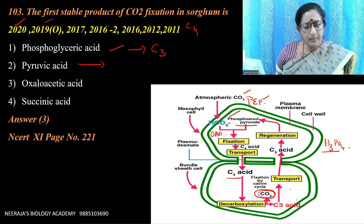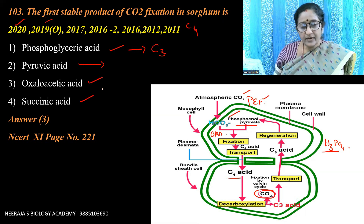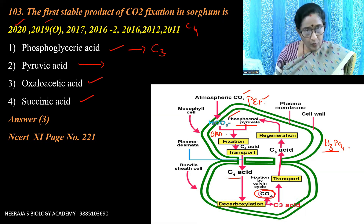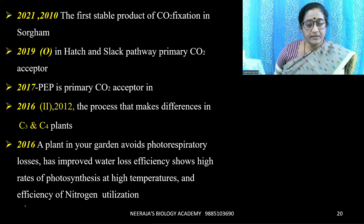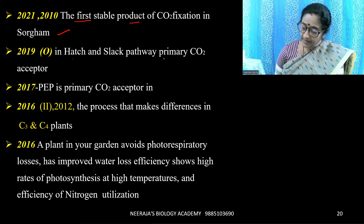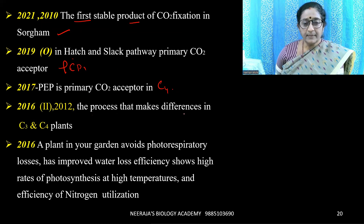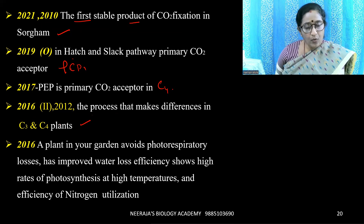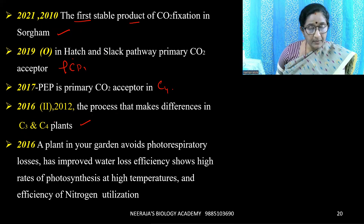Phosphoglyceric acid is related to the C3 cycle. Pyruvate acid formation occurs in the bundle sheath cell. Succinic acid appears in the Krebs cycle where alpha-ketoglutaric acid is converted to succinic acid via succinyl-CoA, which undergoes substrate-level phosphorylation. So the answer is oxaloacetic acid. In C3 plants, 18 ATP molecules are required, whereas in C4 plants, 30 ATP molecules are required.